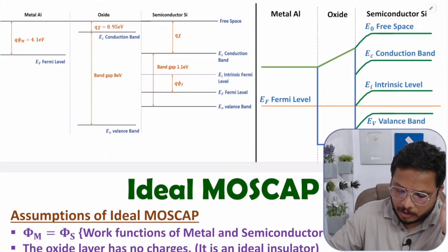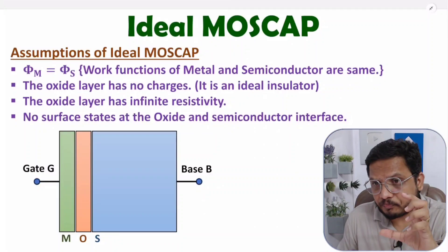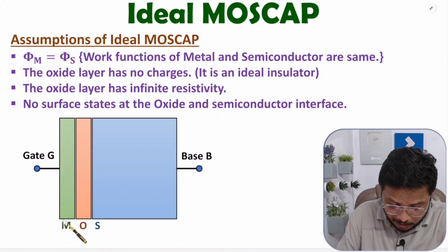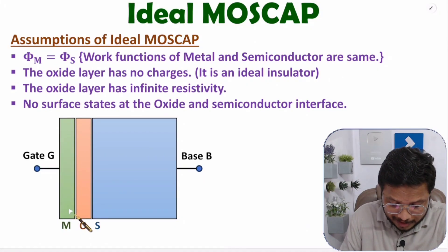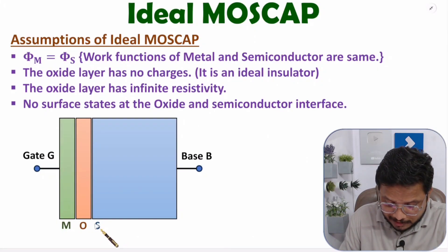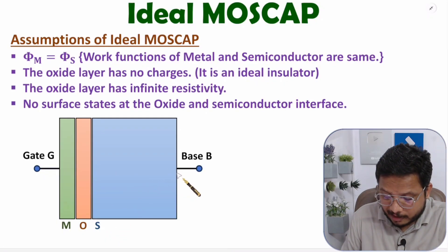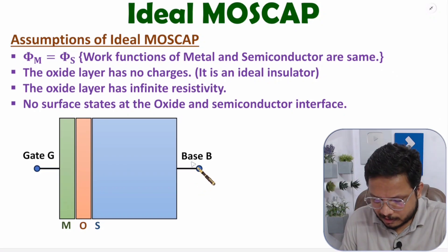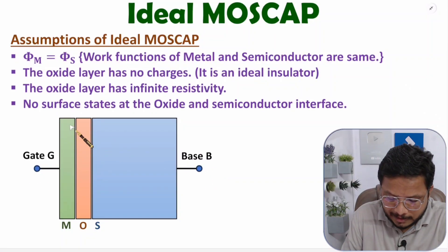Now, to understand ideal MOS cap, first I will explain the assumptions. But first, you should know what MOS cap is. It is a metal, oxide, and semiconductor layer capacitor. The metal layer is connected with the gate terminal. The oxide layer, which is SiO2, is sandwiched between metal and semiconductor. The semiconductor could be P-type or N-type. With the semiconductor, we have a base terminal, also referred to as the substrate terminal. So, this is the two-terminal MOS cap.